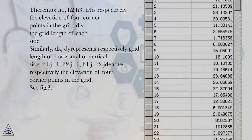Similarly, dx, di represents respectively grid length of horizontal or vertical side, h1 j+1, h2 j+1, h1 j, h2 denotes respectively the elevation of four corner points in the grid.